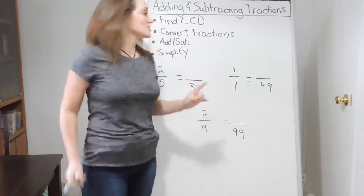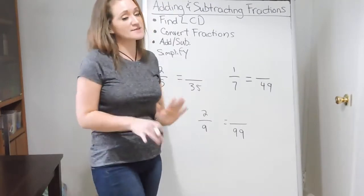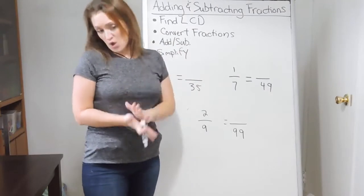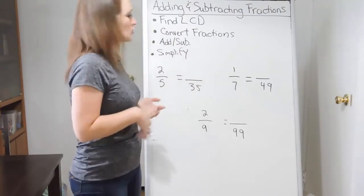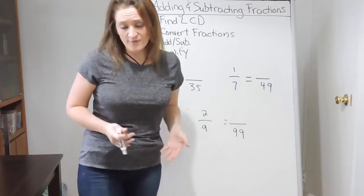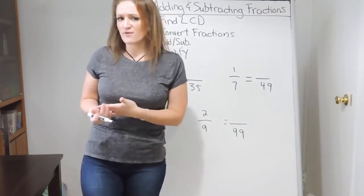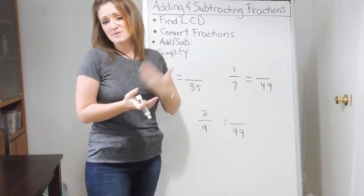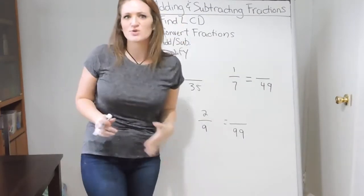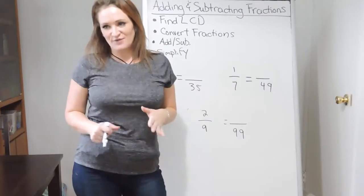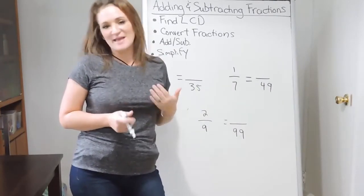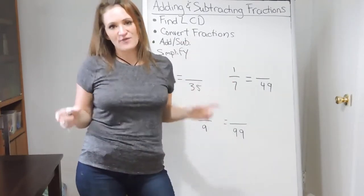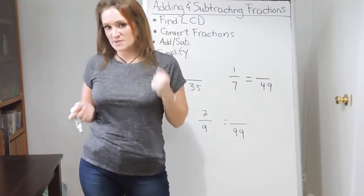When it comes to adding and subtracting fractions, we have four general steps. The first step is to find the lowest common denominator, because for the most part you're going to be given an example where you do not have common denominators. In order to add and subtract fractions you have to have common denominators — there's no way around that. Teachers are not going to give you the easy examples that already have common denominators.